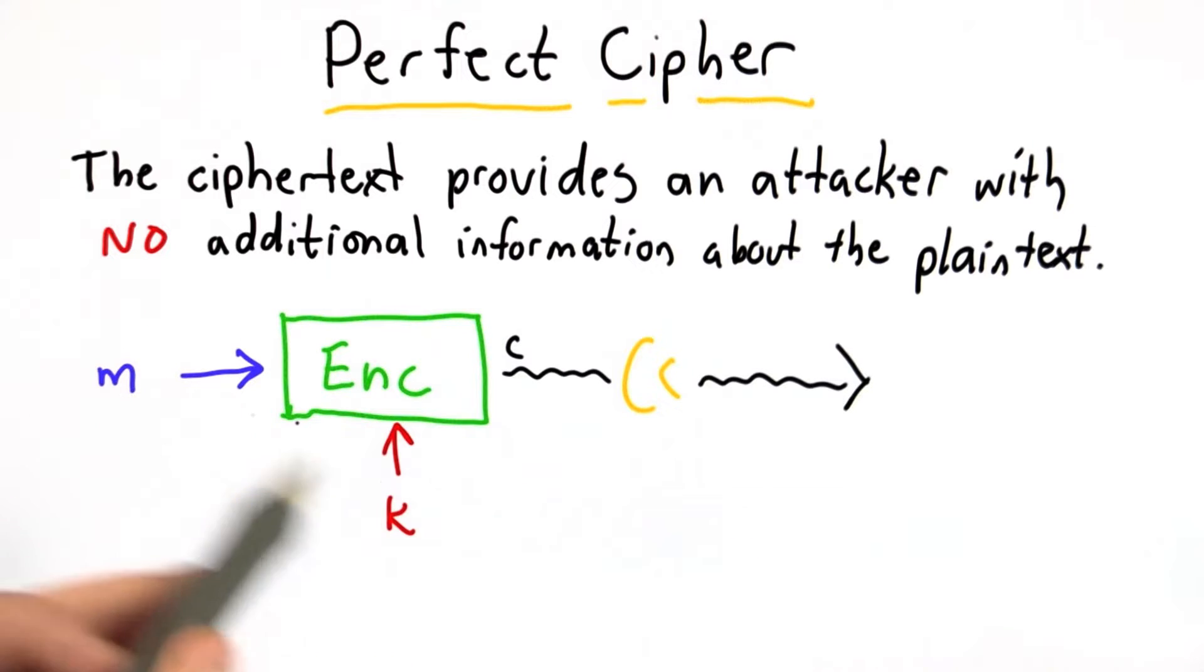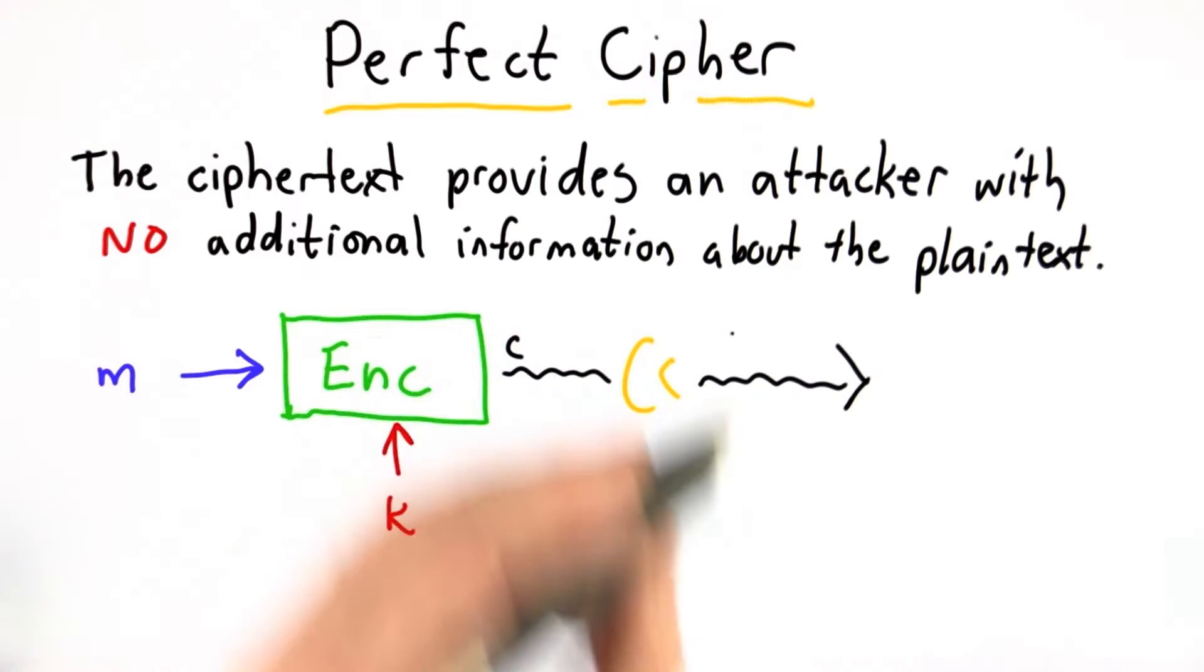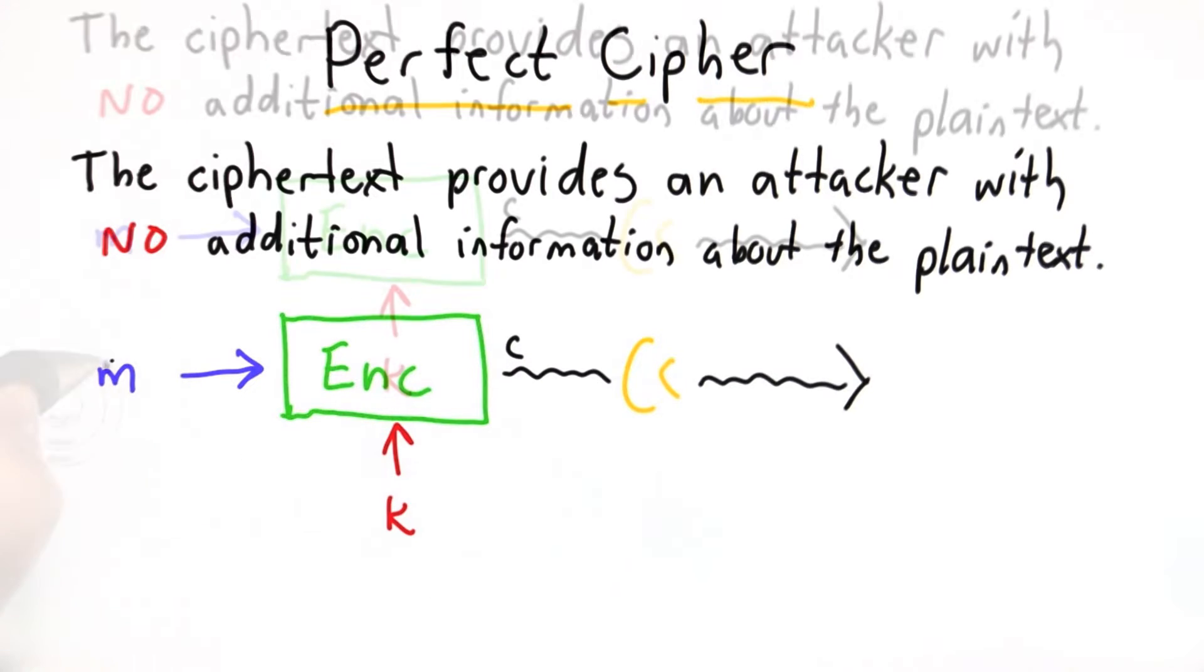We have a message being encrypted with a key. The attacker is intercepting that ciphertext sent over the insecure channel. What we want to know is that an attacker who sees just the ciphertext learns nothing about the message.